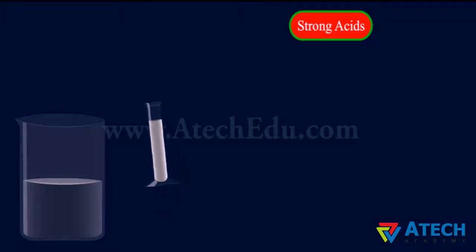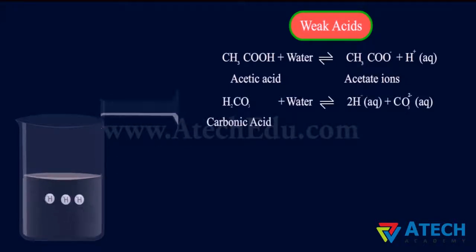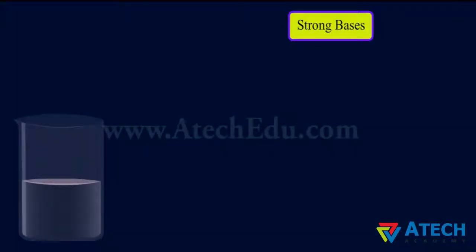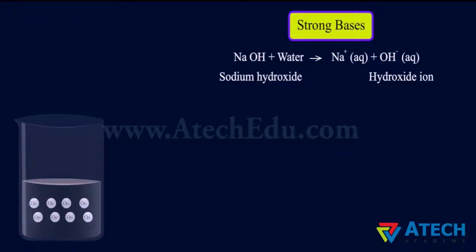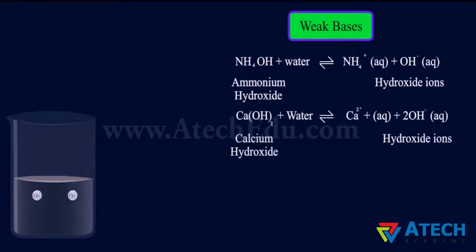Acids like hydrochloric acid and nitric acid give rise to more hydrogen ions in aqueous solution — they dissociate completely to give a large amount of hydrogen ions. These are called strong acids. Strong bases dissociate almost completely in aqueous solution to produce a large amount of hydroxide ions. Weak bases like ammonium hydroxide and calcium hydroxide dissociate only partially in aqueous solution to produce a small amount of hydroxide ions. These are called weak bases.